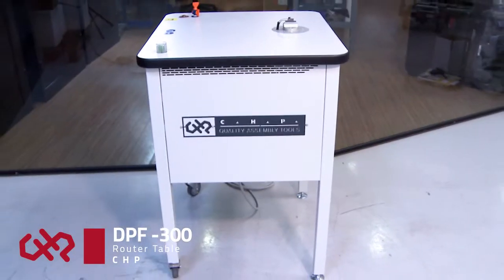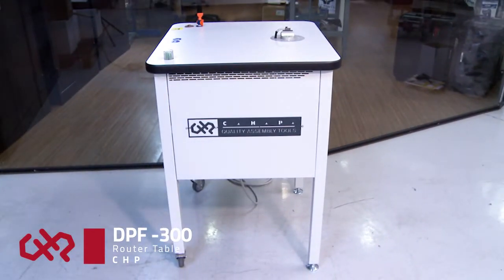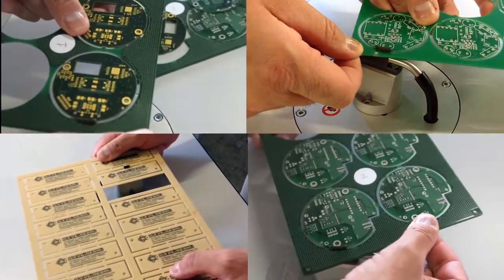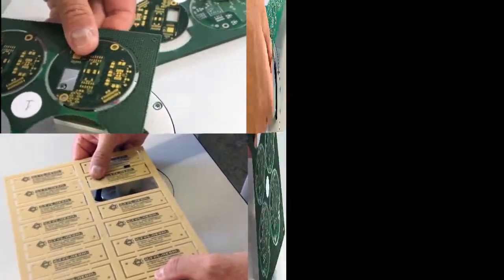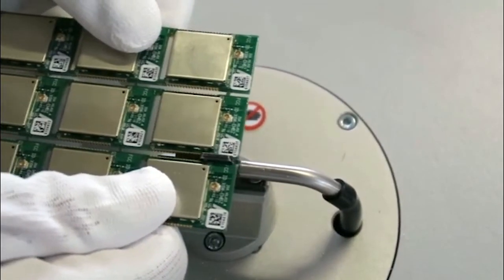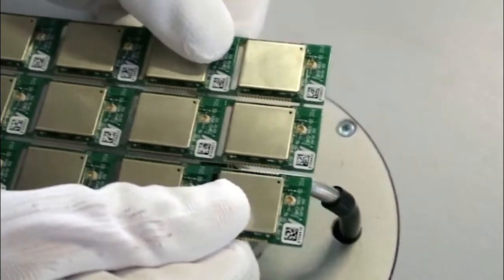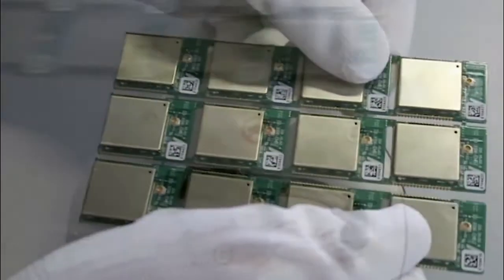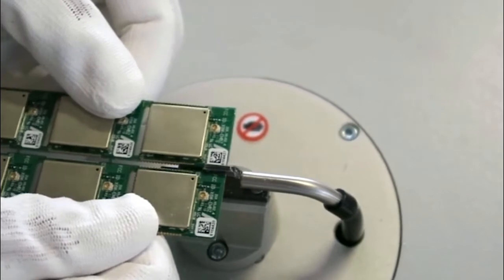The DPF-300 is a manual router table for depaneling printed circuit boards from a panel or multi-block. The DPF-300 milling cutter cuts the tab with the same quality as an expensive automated system but at a much lower cost.